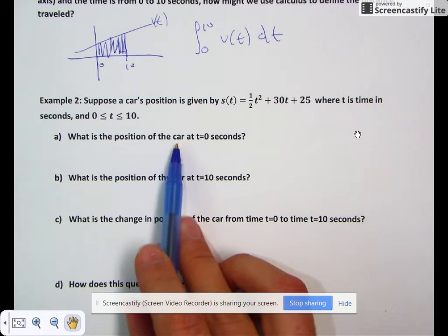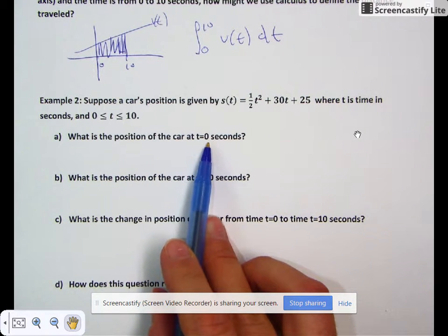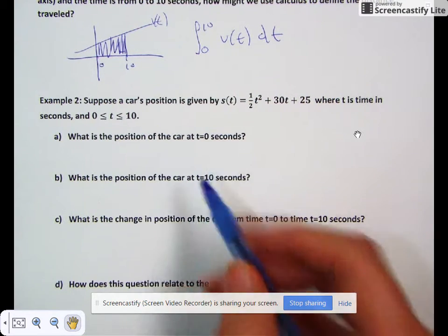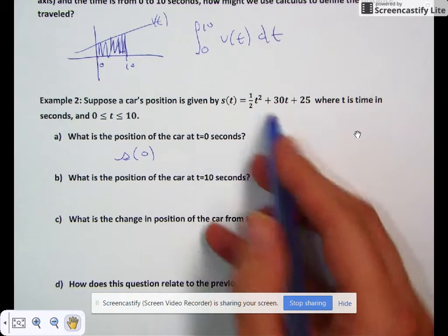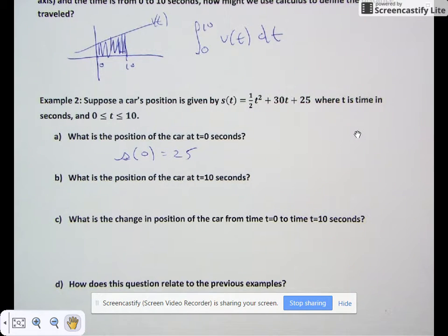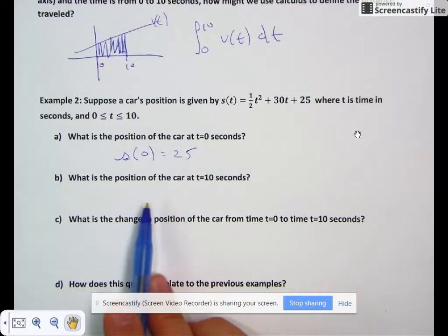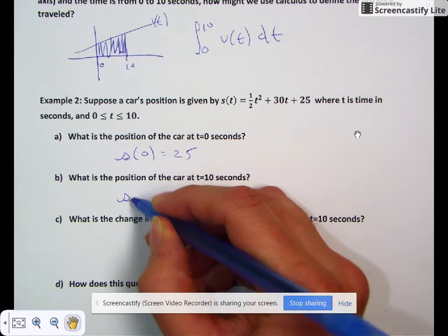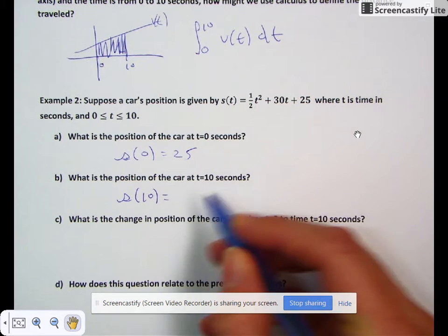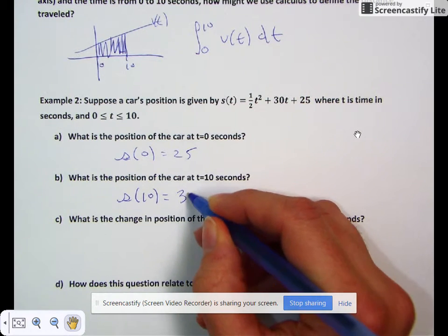What is the position of the car at t = 0 seconds? s(0) = 25 when we plug in 0 for t. What is the position of the car at t = 10 seconds? We plug in 10 for t and get s(10) = 375.